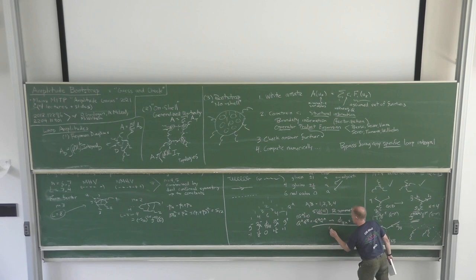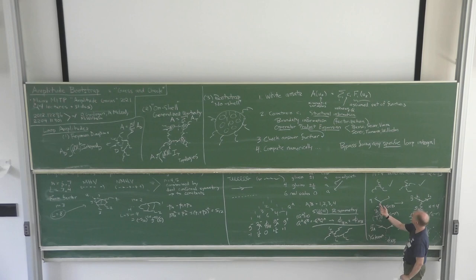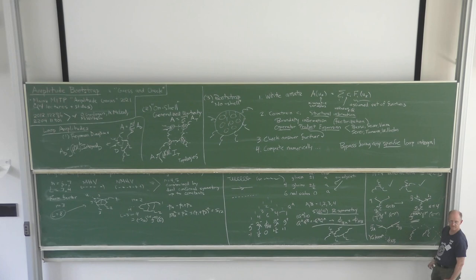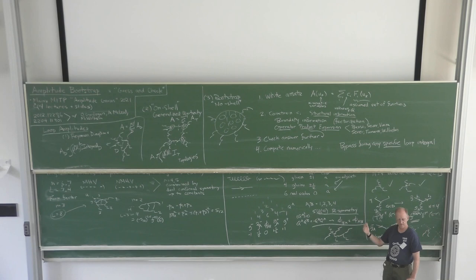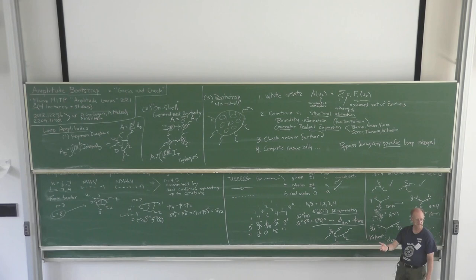The key point is: for an n-gluon amplitude at tree level, there's no way it can contain matter, because matter is produced from gluons two at a time — you never make a single matter particle. If you pair-produce matter you have to destroy it again, making a loop. So you can distinguish N=4 and QCD in the n-gluon amplitudes at loop level, but not at tree level.